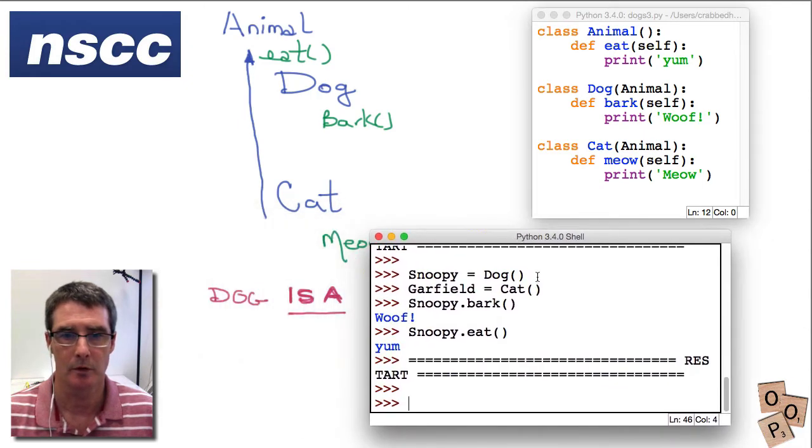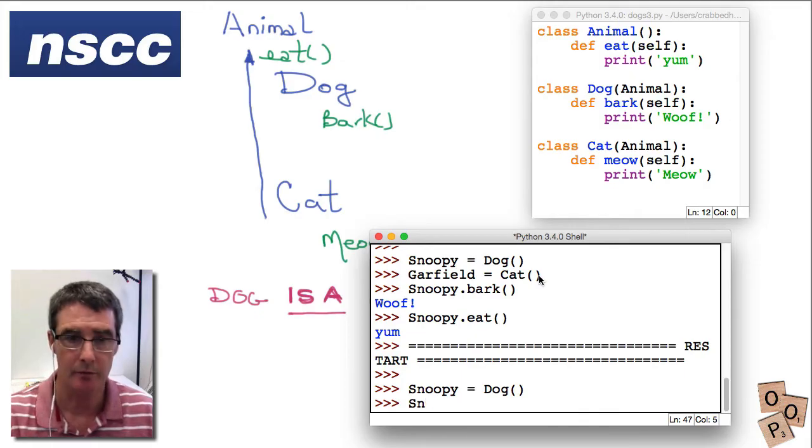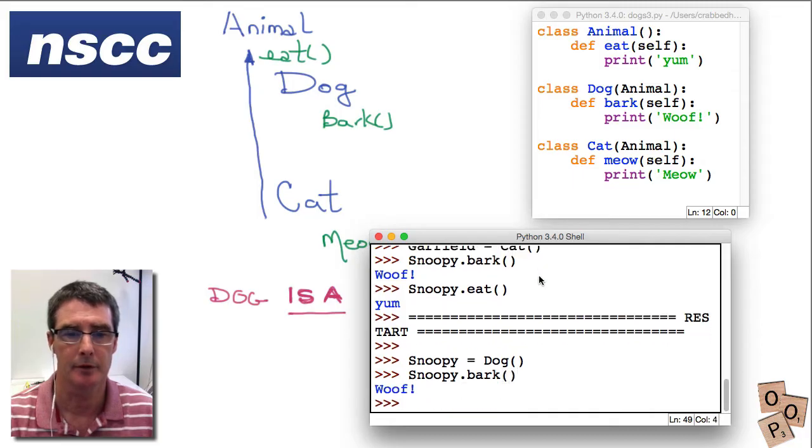So we'll create our Snoopy and as before Snoopy can bark or Garfield can meow. But because of inheritance Snoopy can also eat.